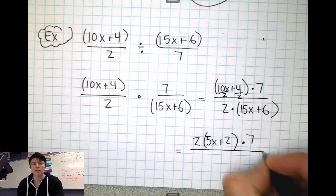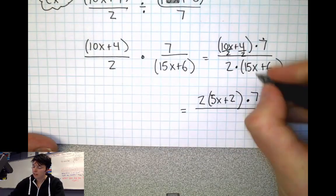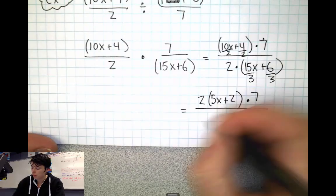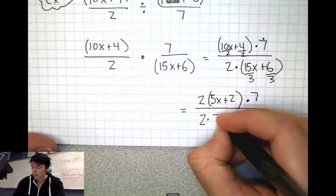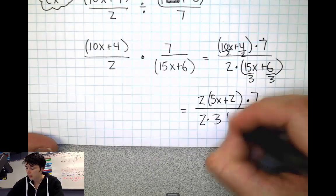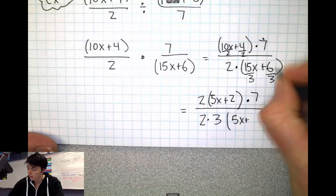On the bottom of this thing, what I'm probably going to have to do is I'm going to divide a 3 out, dividing by 3. So there's a 2 here. Now I'm going to divide the 3 out. So there's going to be a 2 and a 3. And then inside, 15 divided by 3 is 5x, plus 6 divided by 3 is 2.